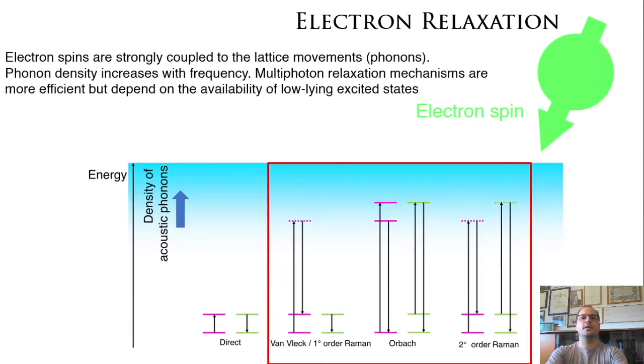Why is relaxation so much affected? Because electron spins are strongly coupled to the lattice movements that are called phonons, and the phonon density increases with frequency. So a single phonon relaxation mechanism needs a phonon that matches the frequency of the electron Larmor frequency.